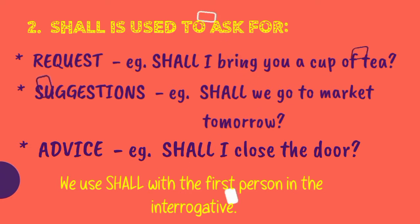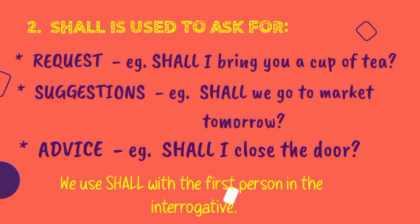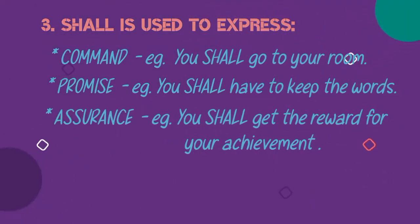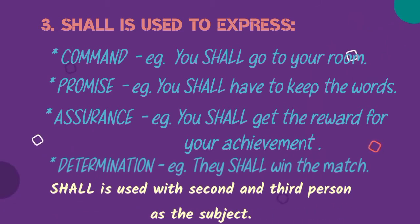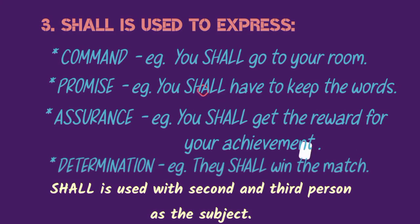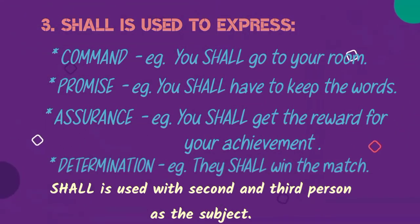We use shall with the first person in the interrogative form. Shall is also used to express command — you shall go to your room. Promise — you shall have to keep the words. Assurance — you shall get the reward for your achievement. Determination — they shall win the match. Here, shall is used with the second and third person as the subject.